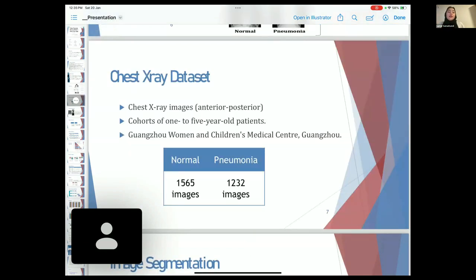Our data set includes AP chest x-ray images from patients aged 1 to 5, from the Guangzhou Women and Children's Medical Center, using 1,565 images of normal lungs, mixed with 1,232 images of lungs with pneumonia.